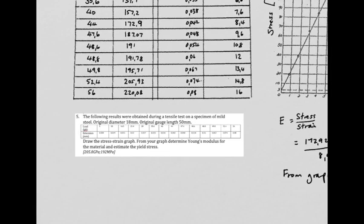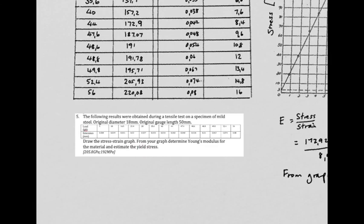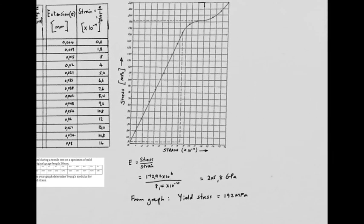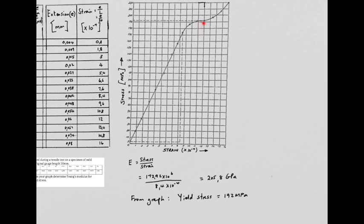Finally, they ask you for the yield stress. Remember, yield is where we have a sudden increase in extension or strain with little or no increase in load or stress. So that would be this flat portion over here. Find the flat portion, run back over here, and you find about 192 megapascals as being your yield stress. That brings us to the end of this tutorial.